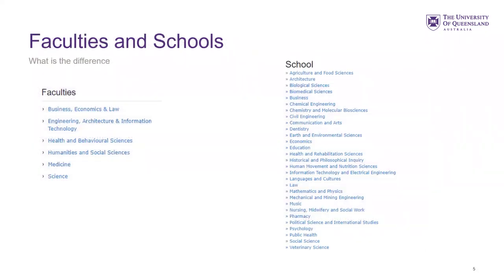So faculties and schools. Here at UQ, we have six faculties and around 32 schools. The faculties bring together teaching and research staff in schools, centres and institutes, and they provide study, research and partnership opportunities in Australia and the world. Within each faculty, you will find a number of schools. We can see some of the schools listed, and we can pick out ones for the Engineering, Architecture and IT faculty — such as Chemical Engineering and Civil Engineering. So while your faculty is the Engineering, Architecture and IT faculty, you will also be part of a school.